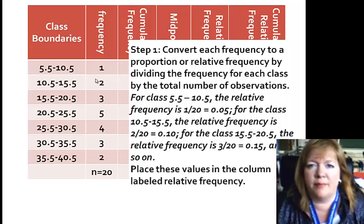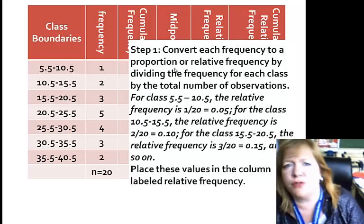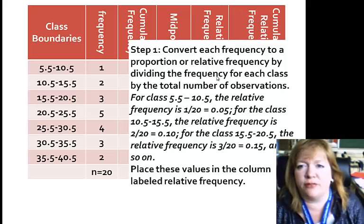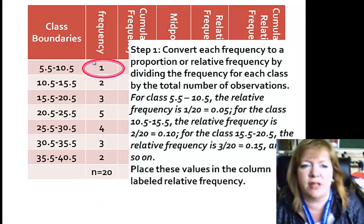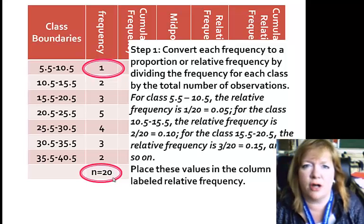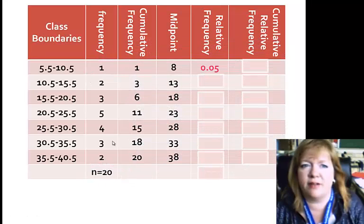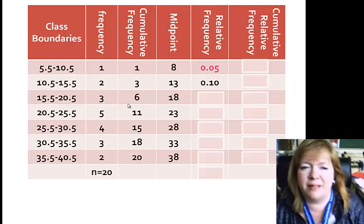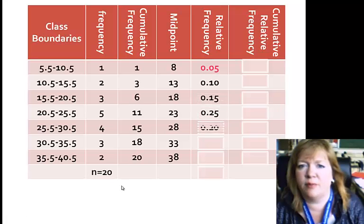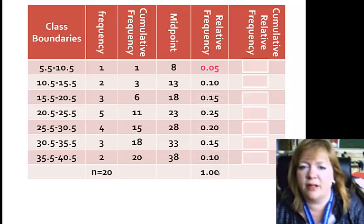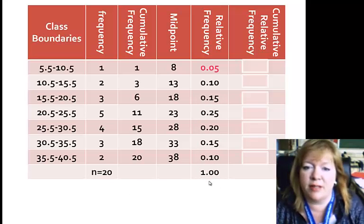The first step, it says, is to convert each frequency to a proportion or relative frequency by dividing the frequency for each class by the total number of observations. So for example, we're going to take this frequency, 1, and we're going to divide it by the total. 1 divided by 20 is going to give us our first relative frequency. Relative frequency should always be less than 1. When I divide 1 by 20, I get .05. The next one I'm going to do is 2 divided by 20, which gives me .10. 3 divided by 20 is going to give me .15, and so on. If I add it up, it should equal out to 1. 1 is the same as 100%.